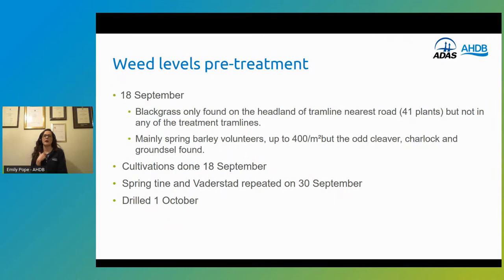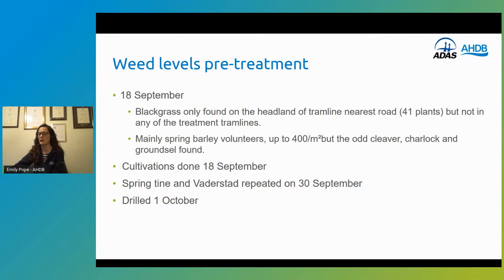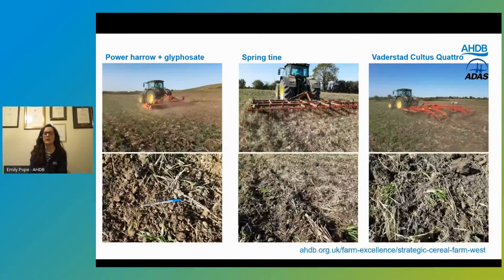Looking at some of the weed level results pre-treatment: on the 18th of September, the cultivations were done and researchers reported that blackgrass levels were actually quite low at this point. The main area of blackgrass was found on the headland of the tram line rather than on any of the treatment tram lines. But there was evidence and presence of other weeds in the field, including cleavers, charlock and ground sow were also found. The cultivations were done on the 18th of September, and the additional cultivation treatments were repeated again on the 30th. Then the whole field was drilled on the 1st of October.